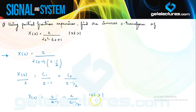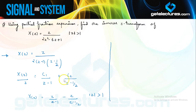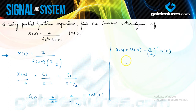If you look at this ROC carefully, it signifies that this signal X(N) is going to be a right-sided sequence, because the ROC is lying to the right of the rightmost pole. We can perform the inverse Z-transform directly. We know that Z upon (Z − 1) is the Z-transform of U(N), and the second expression is the Z-transform of (1/2)^N · U(N). So the required inverse Z-transform is going to be [1 − (1/2)^N] · U(N).